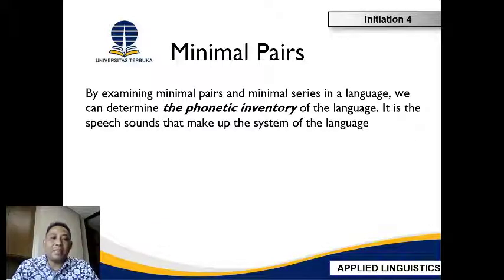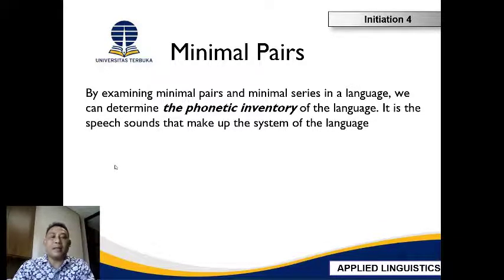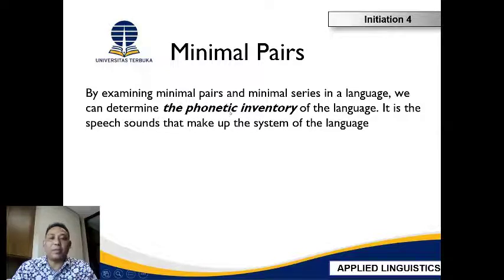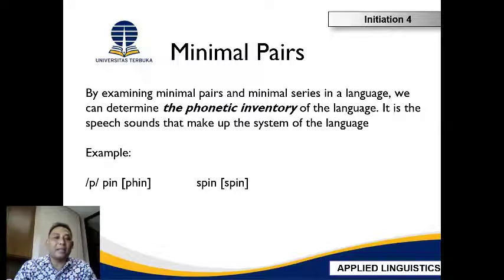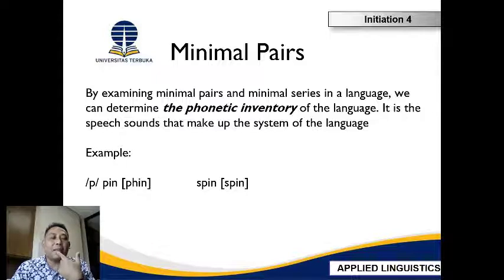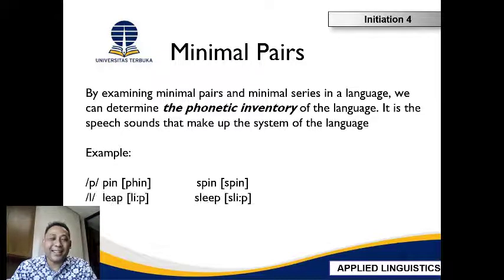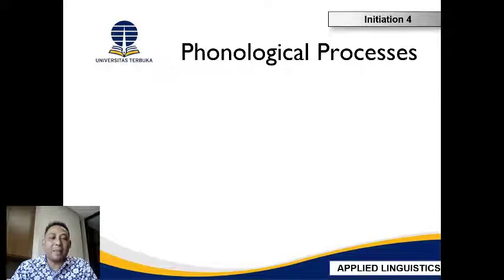Next, about minimal pairs. By examining minimal pairs in a language, we can identify what's called the phonetic inventory of the language — the speech sounds that make up the system of the language. For example, the word 'pin' with plosive aspiration and 'spin' without plosive aspiration — can you hear the difference? And also 'leap' and 'slip.'